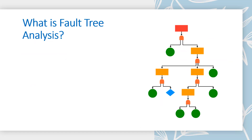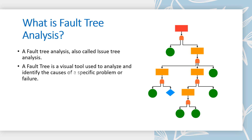In this slide we will first discuss what is fault tree analysis used during investigation. Fault tree analysis is also called issue tree analysis. A fault tree is a visual tool used to analyze and identify the cause of a specific problem or failure. When a system failure occurs, fault tree analysis helps us break down the issue in a step-by-step manner, using a structural diagram to trace the failure back to its root cause.